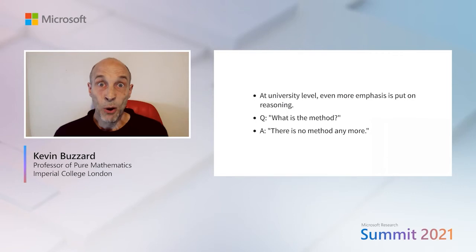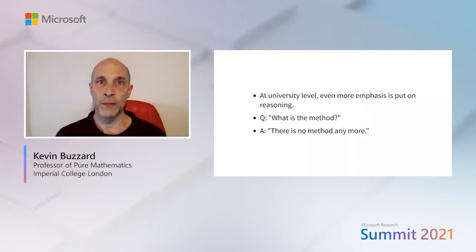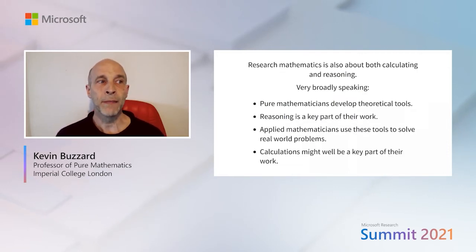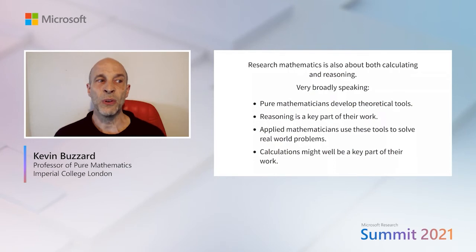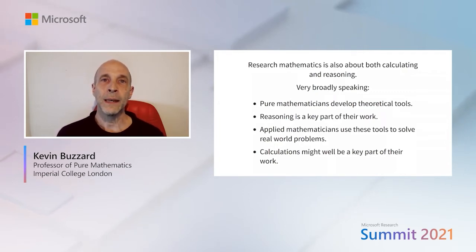At university level, even more emphasis is placed on reasoning. Students who are very strong at calculations want to know what the method is — but sometimes there is no method. You just have to use the tools you have in innovative ways. Research mathematics is just the same: a mixture of calculating and reasoning. Pure mathematicians are people whose work is mostly about reasoning — they define new structures and prove theorems about them using only the rules of mathematics and develop theoretical tools. Applied mathematicians use these tools to solve real-world problems like weather prediction or internet security.